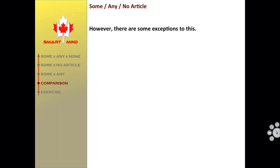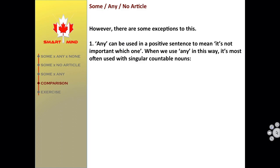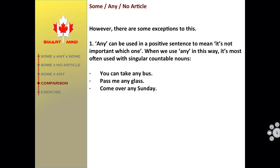However, there are some exceptions to this. Exception one: any can be used in a positive sentence to mean 'it is not important which one.' When we use any in this way, it's most often used with singular countable nouns. For example: 'You can take any bus.' 'Pass me any glass.' 'Come over any Sunday.'